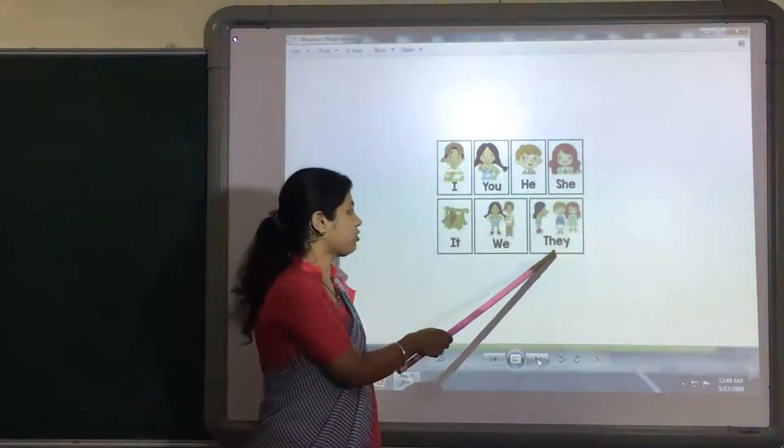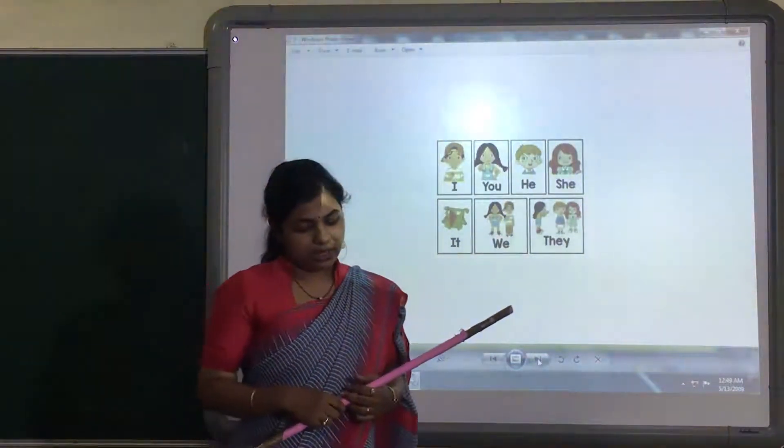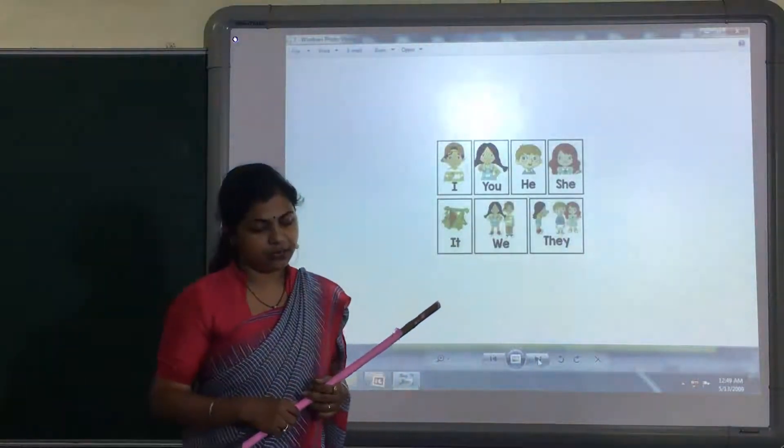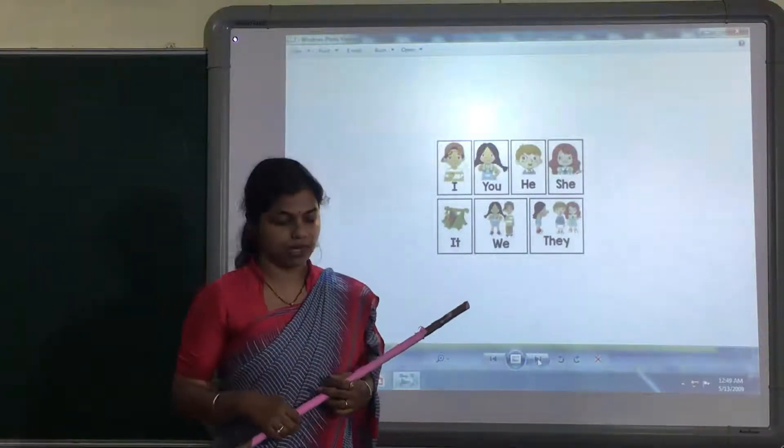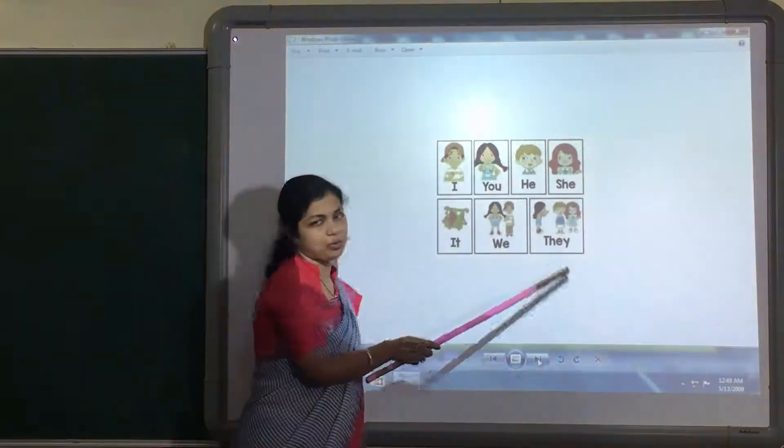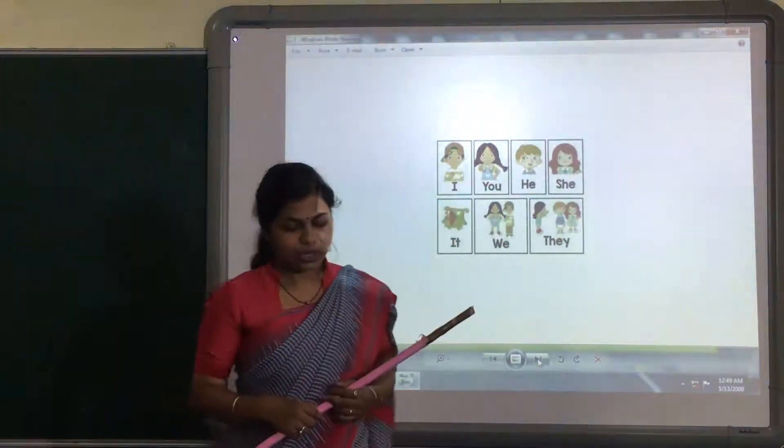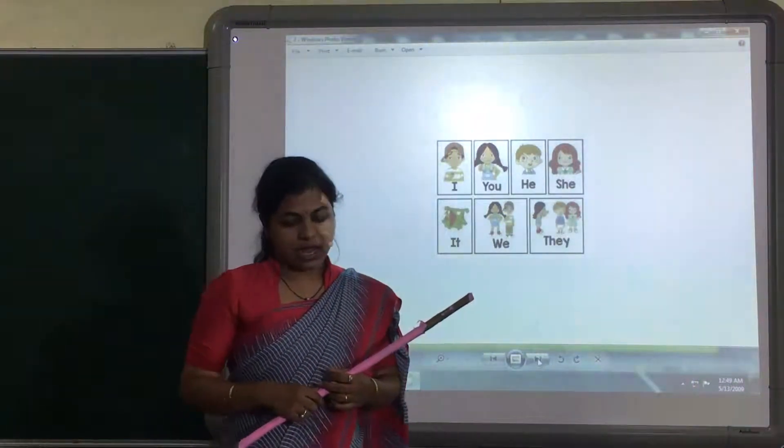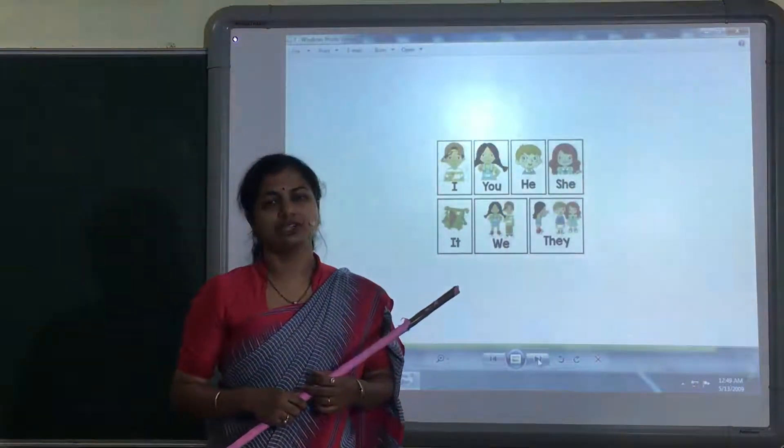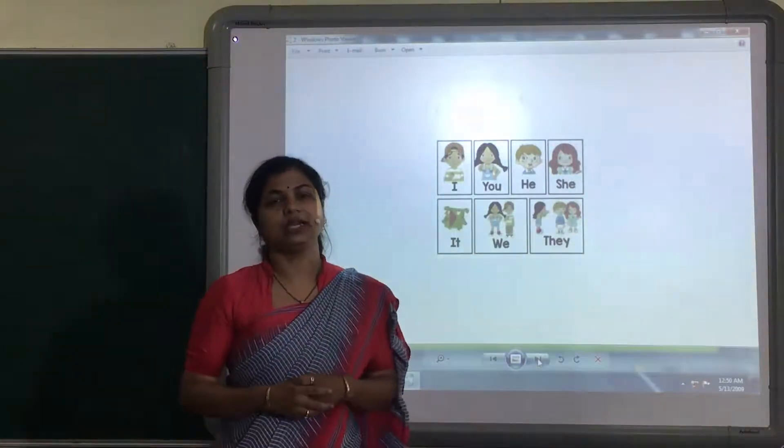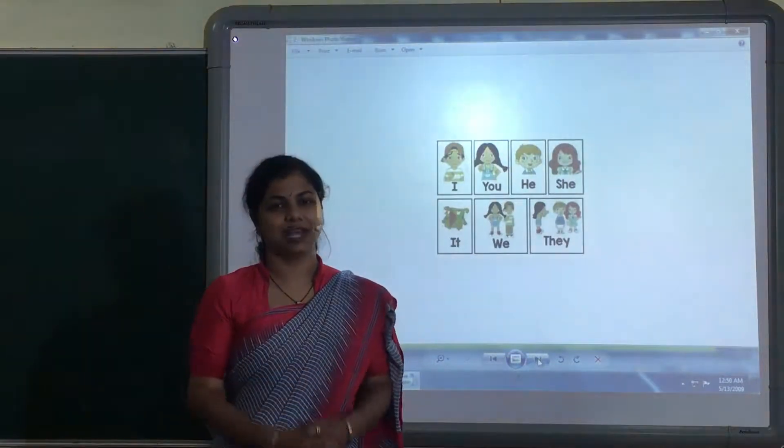And the last pronoun is they. We use they to talk about people or things if there are more than one. Then we use 'they' pronoun to tell about them. For example, they are going to see circus tonight. Now, let's meet in the next video with the exercise. Thank you.